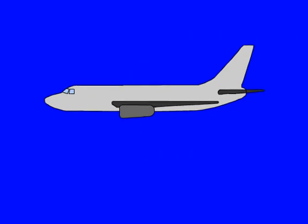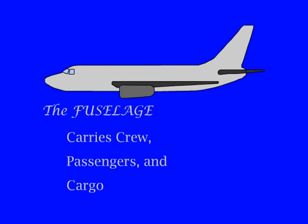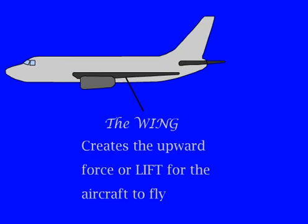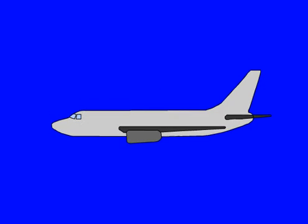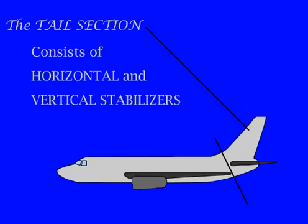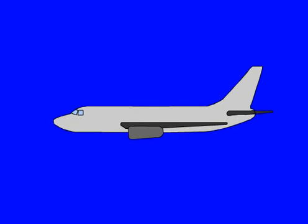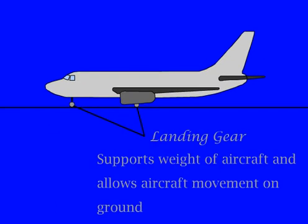This is the fuselage, which carries crew, passengers and cargo. This is the wing, which creates the upward force, or the lift, for the aircraft to fly. This is the engine, which creates the forward force, or the thrust, for the aircraft. The tail section has the horizontal and the vertical stabilizers, and the landing gear, which supports the weight and allows the movement on the ground.